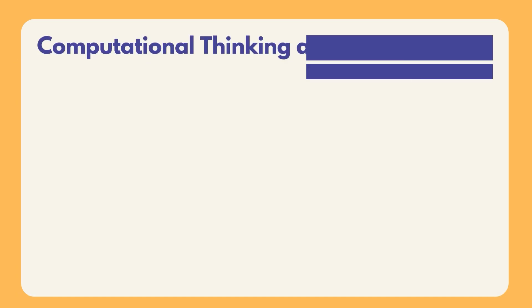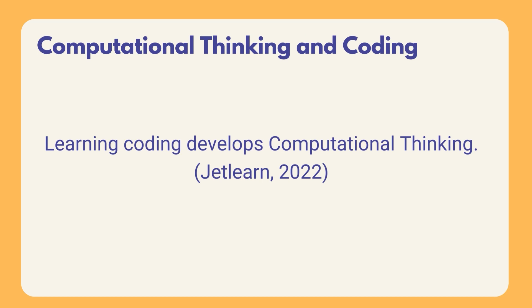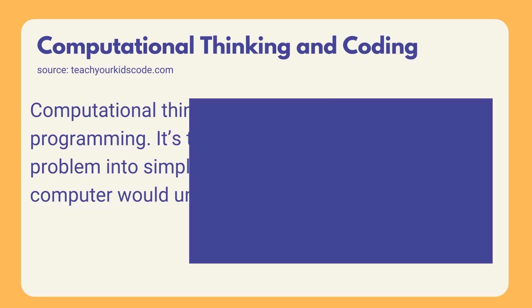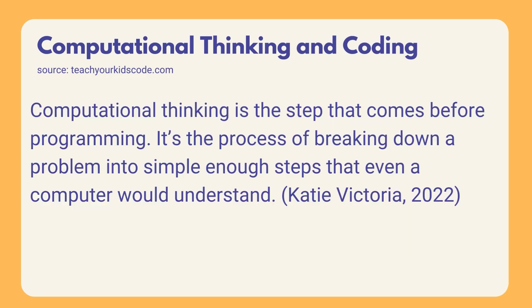There is a strong relationship between computational thinking and coding. While we are coding, we are forcing ourselves to think computationally. On the other hand, computational thinking is the step that comes before programming — it's the process of breaking down a problem into simple enough steps that even a computer would understand. To learn coding easily, we should learn how to think computationally.